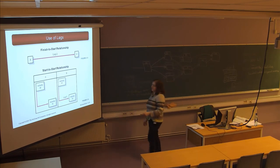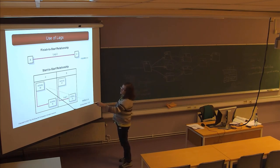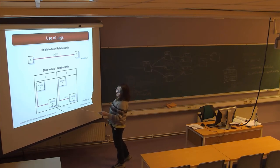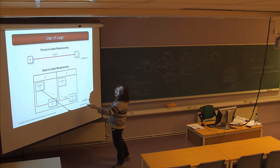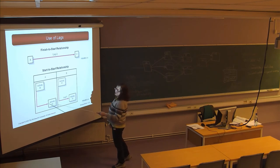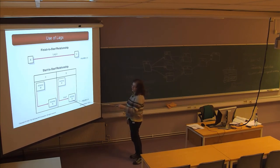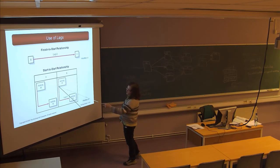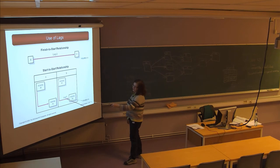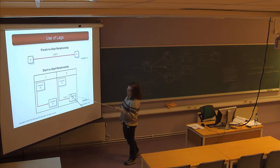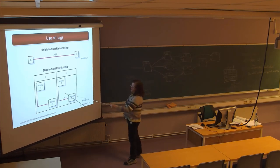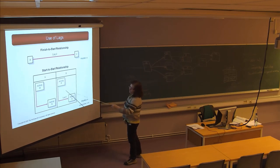In a start-to-start relationship with a lag, if activity Q must wait for activity P to start with a lag of five days, then Q cannot start until five days after P starts. This is a start-to-start relationship — when P starts, five days later Q can start. In a finish-to-start relationship, the first activity has to finish before the next one can start.